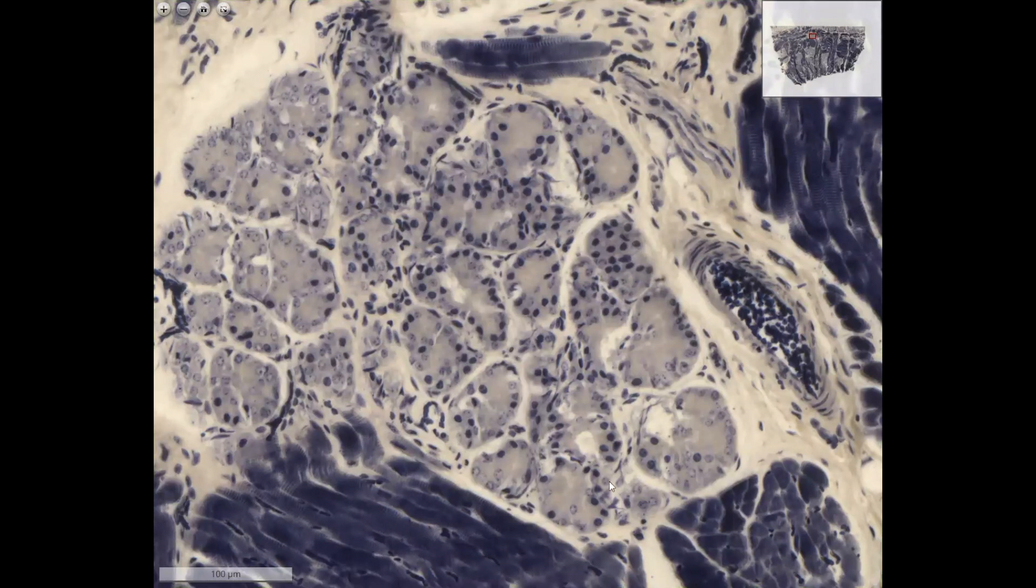Cross-sections of the salivary glands. And here you see an artery in an oblique cut with the red blood cells. The red blood cells are black with this staining.